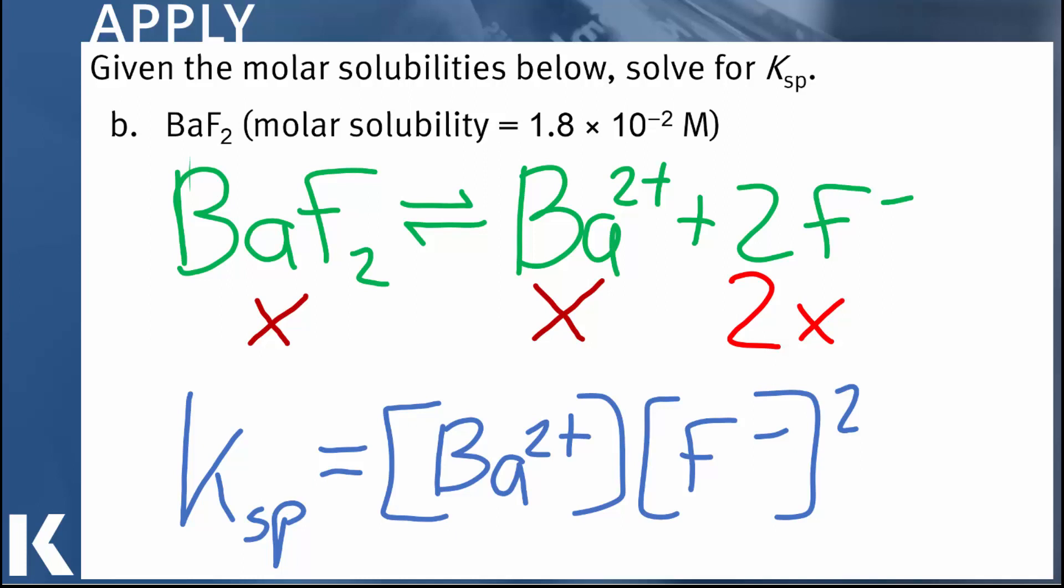The other impact that this is going to have is on the Ksp expression. So notice in the Ksp expression, we have the concentration of barium times the concentration of fluorine, but that concentration of fluorine is squared. Because remember, whenever you write a Ksp expression, you always write as an exponent the stoichiometric coefficient of that species. So in the equilibrium expression, barium has a coefficient of 1, so the Ksp expression has an exponent of 1. We just don't write it because it's just multiplied by itself one time. But the fluorine has an exponent of 2, because fluorine in the equilibrium expression has a stoichiometric coefficient of 2.